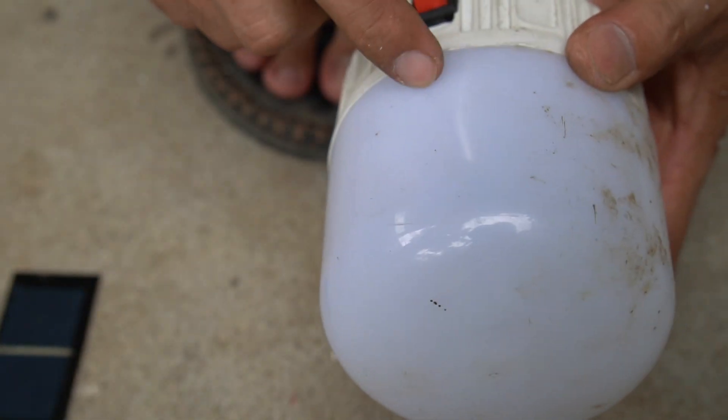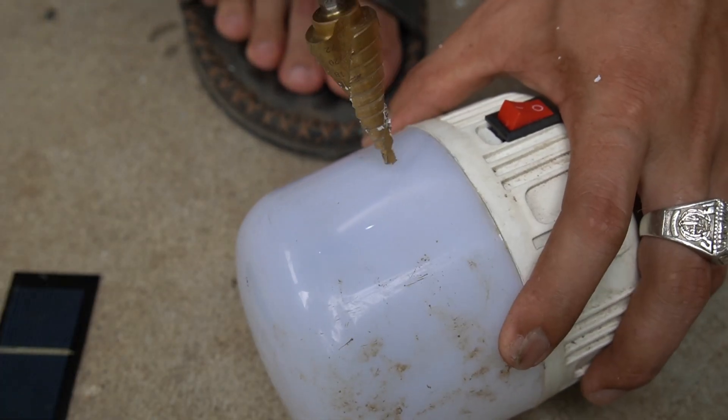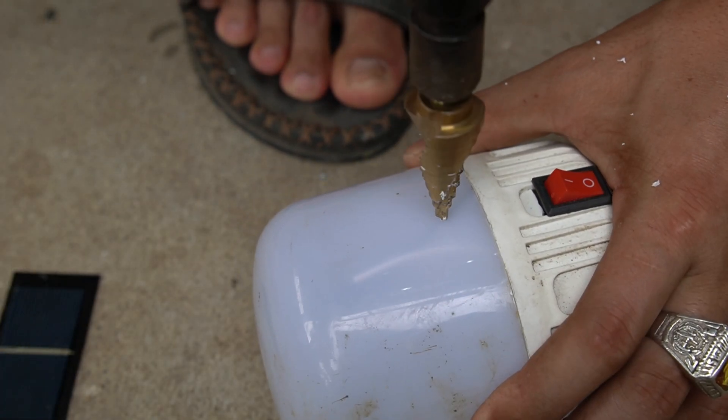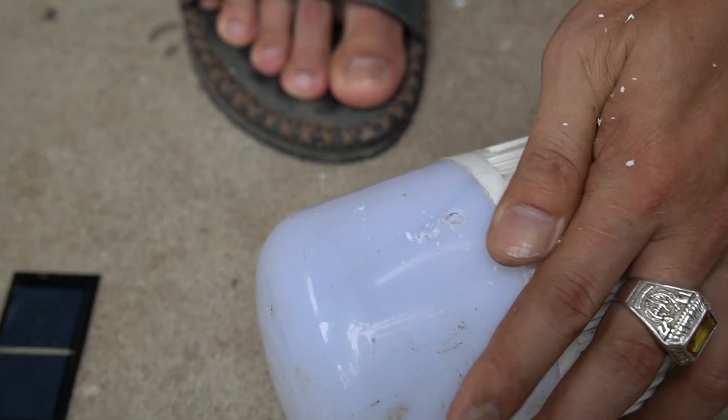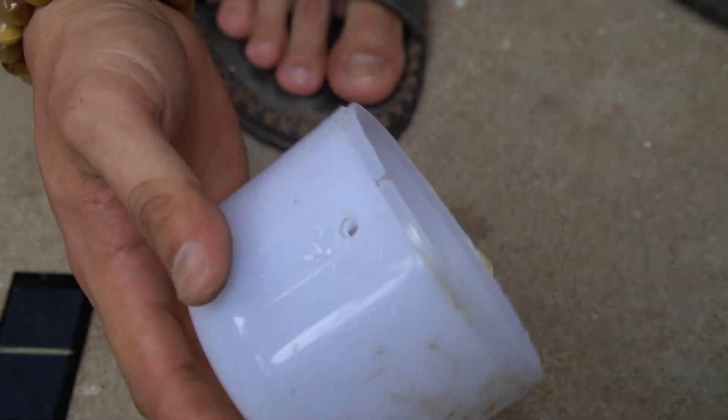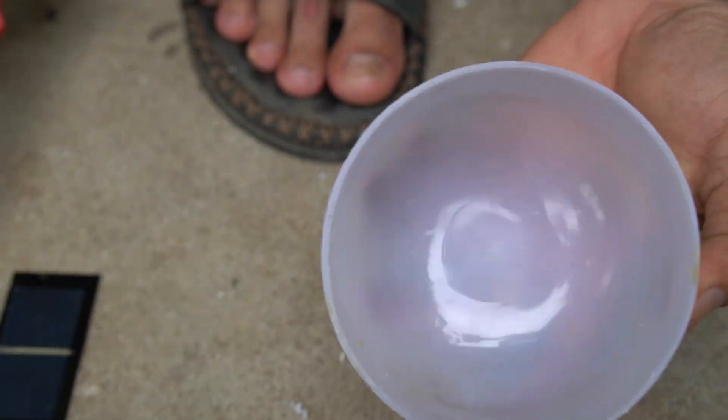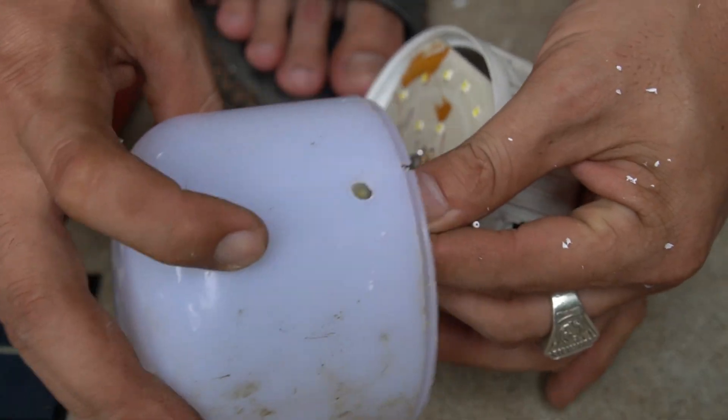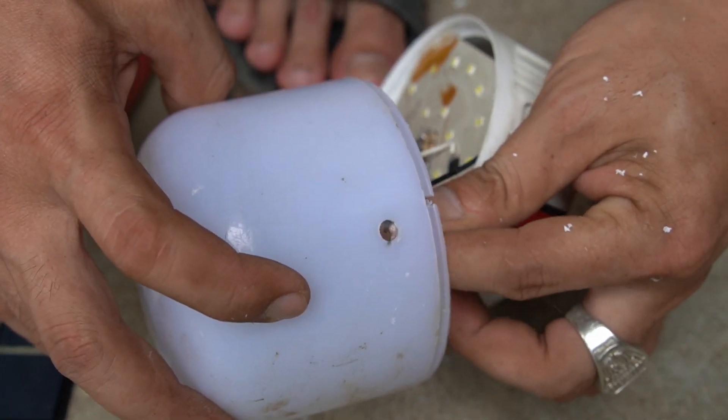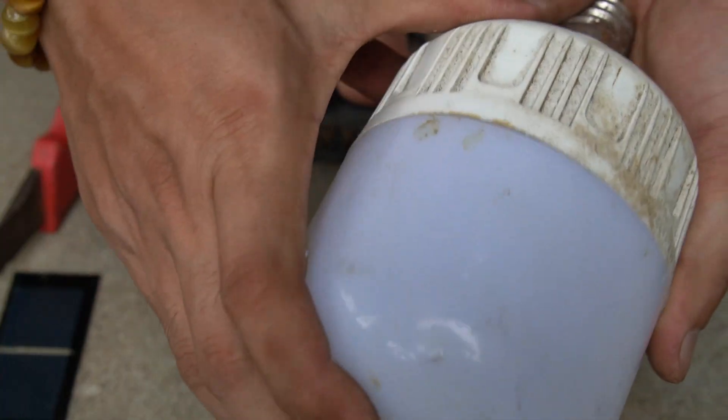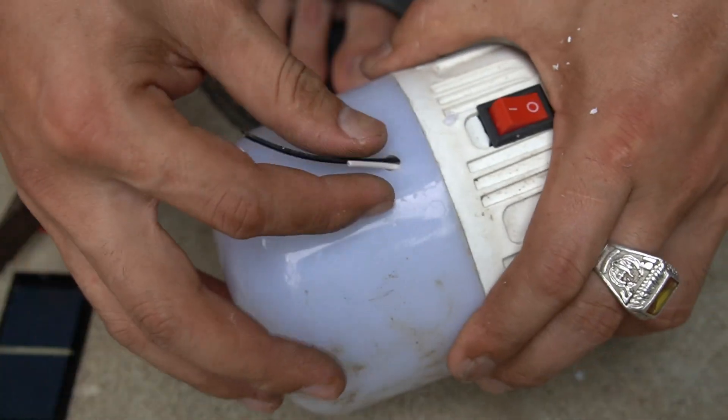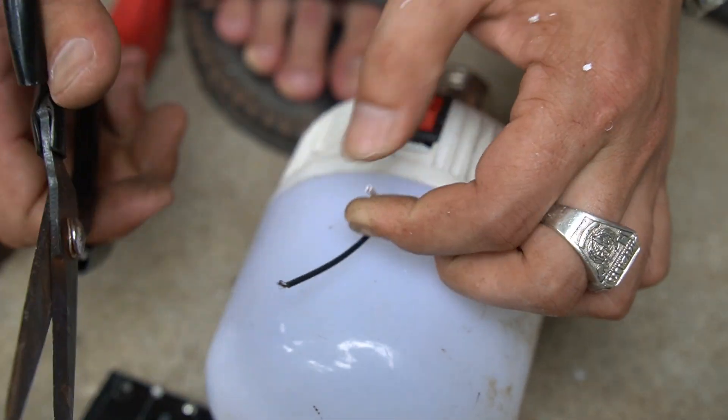I use a small solar panel with a capacity of 1.5 volts. I will drill a small hole in the lid to thread the wire through. Continue removing the ends of the two wires to expose the copper wire.